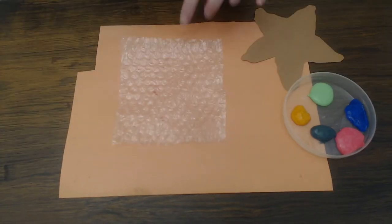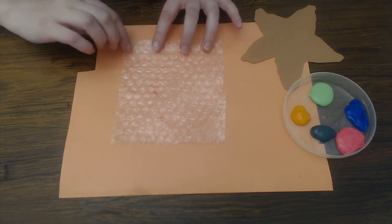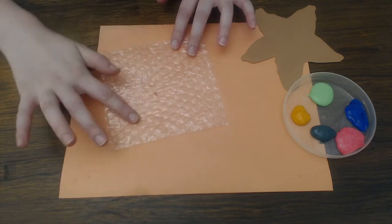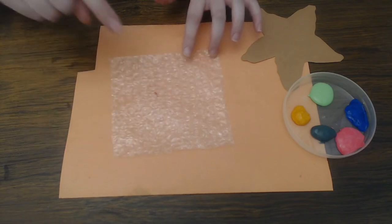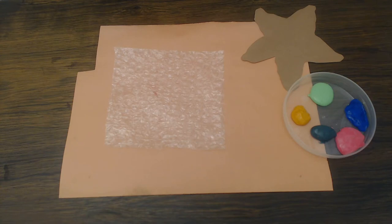I want to make sure that I have my bubble wrap bumpy side up. So if you feel both sides of a sheet of bubble wrap, there's a side that's a little bit more smooth and a side that's a little more bumpy. You want the bumpy side to be facing up. That is the side that we will be painting.